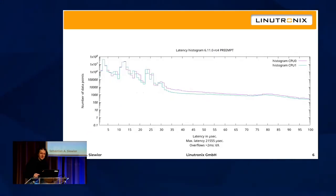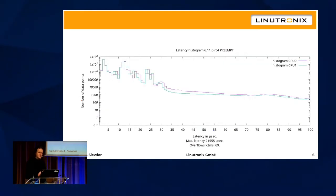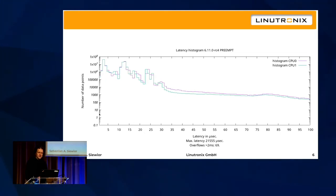What you see here is a histogram of wake-up times — almost 2,800 cycles of 250 microseconds. Multiply those two and you know how long it ran. This has been running on a normal preemptible kernel for eight hours. The Y-axis shows how often a certain latency was measured. The preemptible kernel had overflows greater than 2 milliseconds over 69 times, and the maximum was over 20 milliseconds.